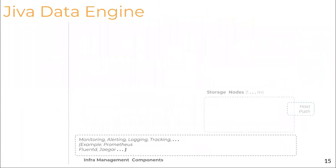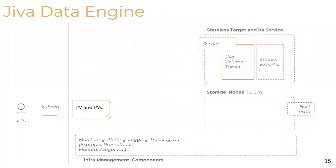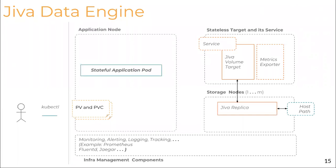A little bit on how the Jiva data engine works. You start with a storage node that has host paths. Whenever a new PV is launched, it starts a Jiva volume target, which is the iSCSI service with a sidecar metrics exporter. Depending on the replica count, Jiva replica pods are launched on different nodes using that host path. The stateful application pod uses the CSI agent to connect to the iSCSI target service and provides the data path. One reason for using the service IP is that the Jiva volume target is stateless — if it gets rescheduled to another node, the initiator talks to the service IP instead of the actual target IP.